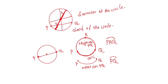If PQ is the diameter, then the two arcs are equal to each other — each is called a semicircle. The two arcs together make up the complete length of the circle.